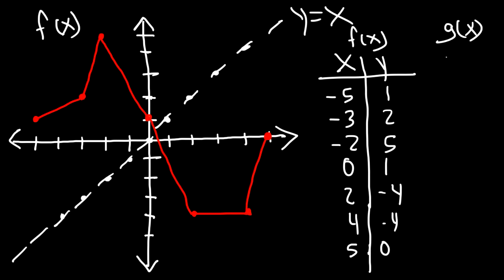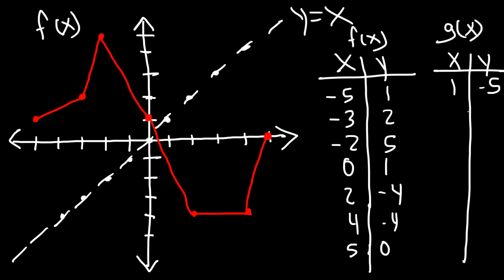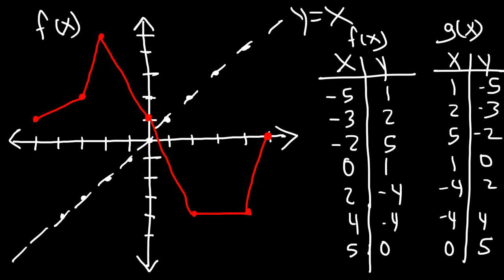Now let's switch these points for the inverse function. So the switched points are: one, negative five; two, negative three; five, negative two; one, zero; negative four, two; negative four, four; and zero, five — in that order. Don't forget to plot one step at a time, connecting each point as you go. So let's plot one, negative five — that's going to be over here.